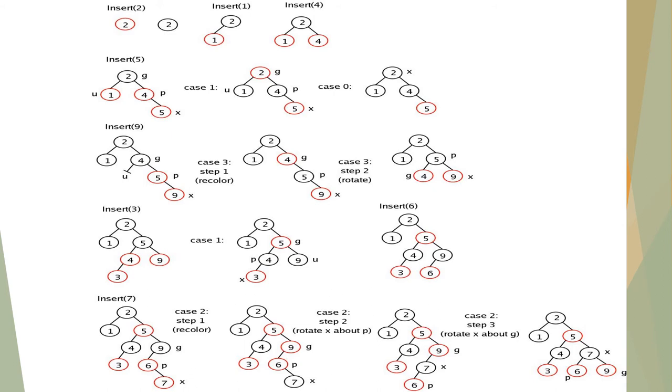Insert 3. As it is smaller than 4, it is placed at the left side. But 4 and 3 are the same color, that is red. We need to change the colors here — make node 5 as red color and node 4 as black color.